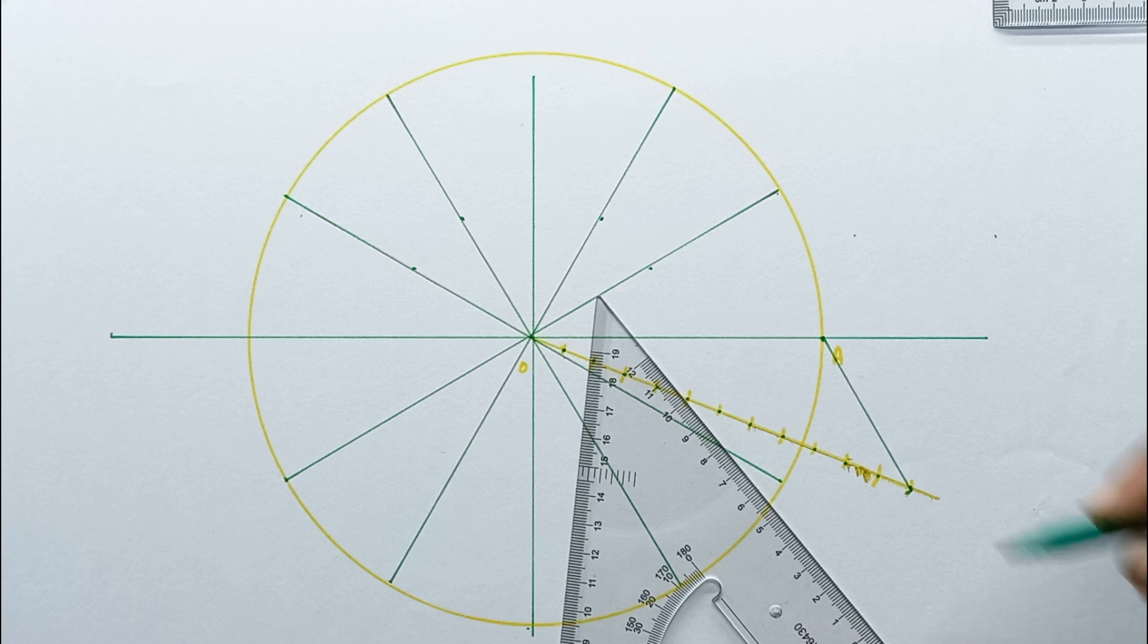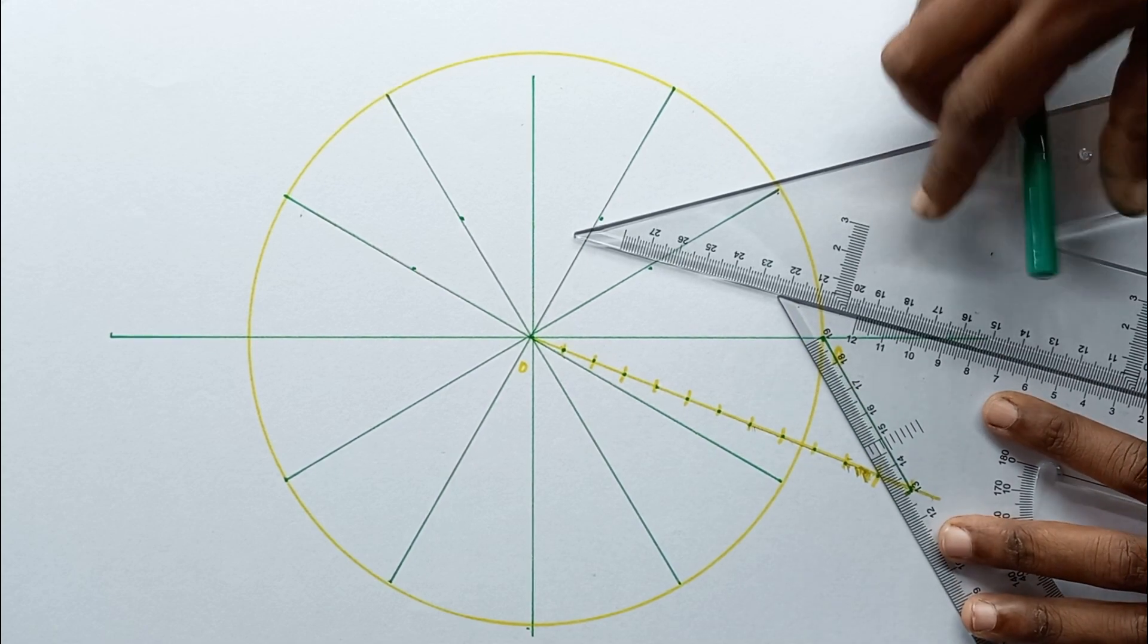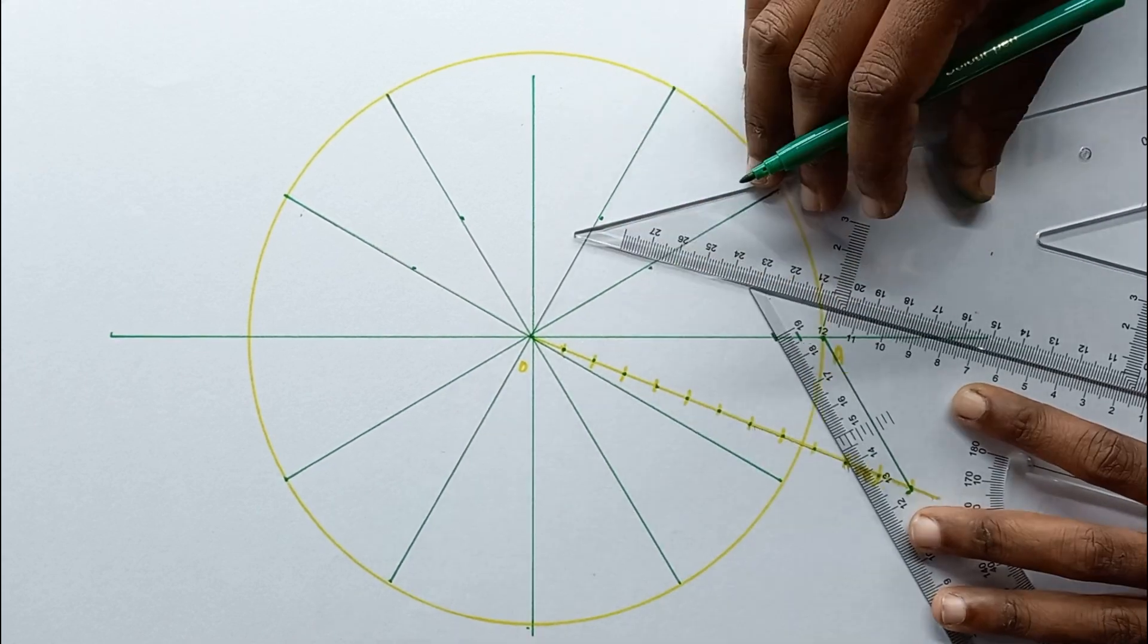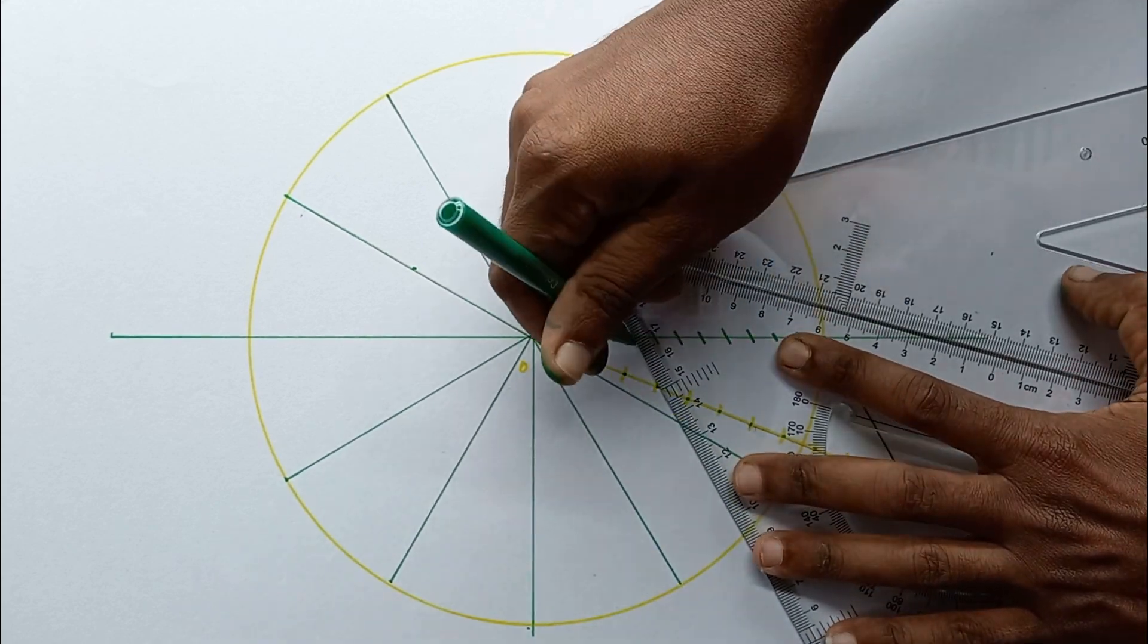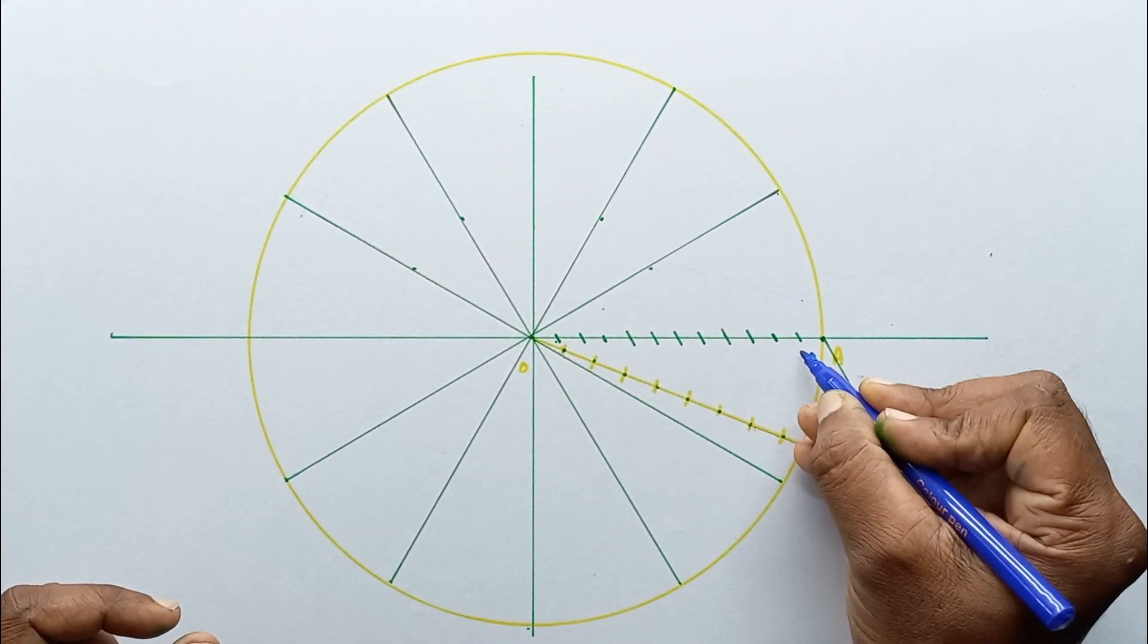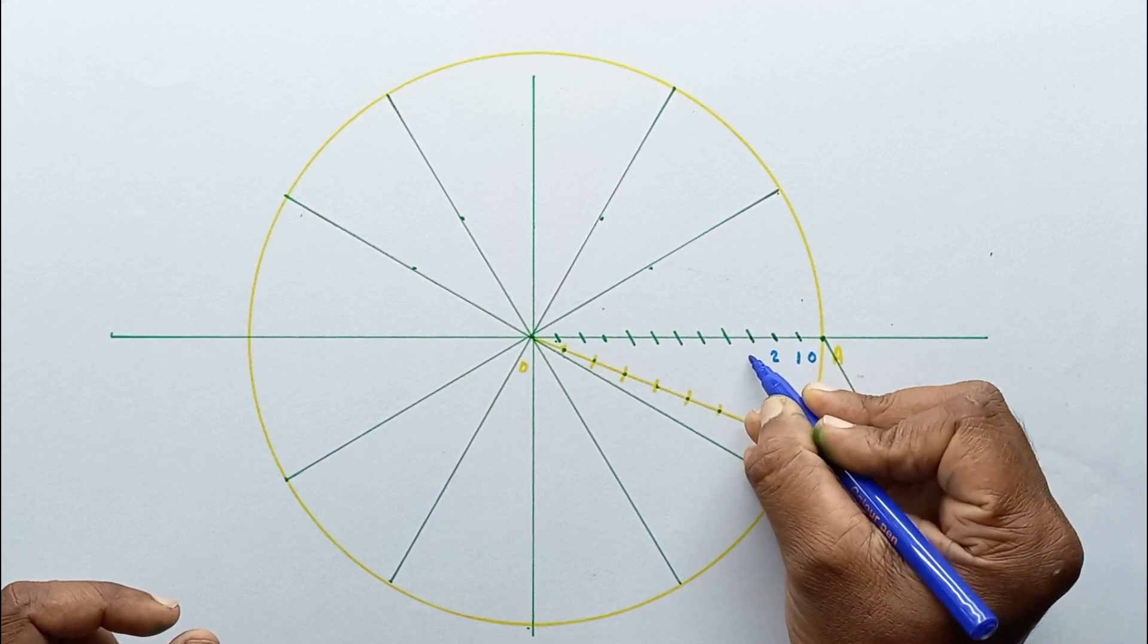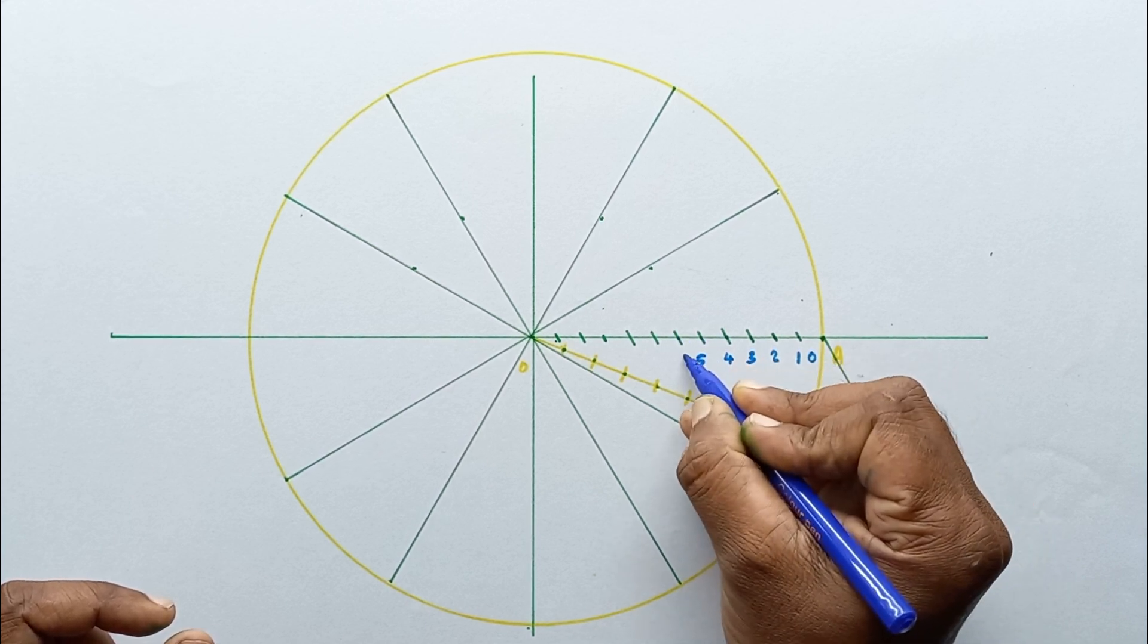Then let's draw the parallel lines passing through this point to this line. Let's mark this point as zero, this point as one, two, three, four, five, six.